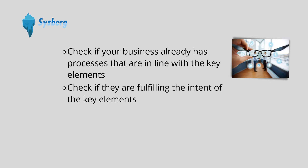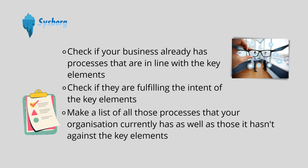There could be other processes that a business is already practicing — for example, processes that are related to the monitoring of projects, inspection of products, or approval of service delivery activities. Make a list of all those processes that your organization currently has as well as those it hasn't, against the key elements.